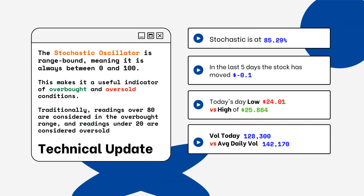You can see on the right side where the stochastic level is on this particular stock. This is a technical update because you want to look for overbought and oversold conditions. Readings over 80% are considered overbought, and readings below 20% are considered oversold. You want to be aware of this when looking at a particular stock.